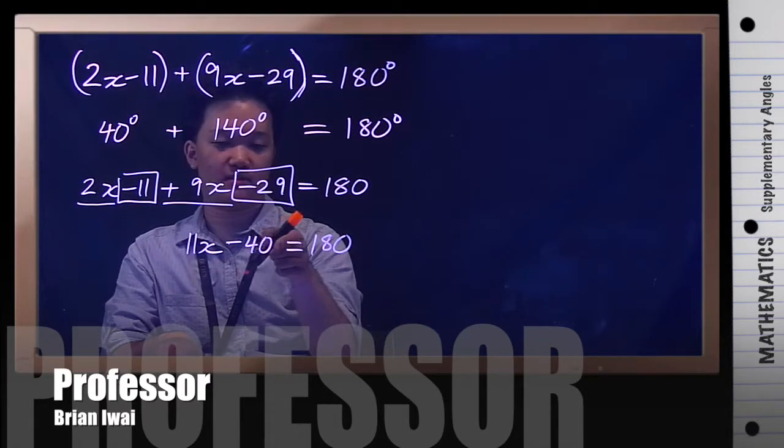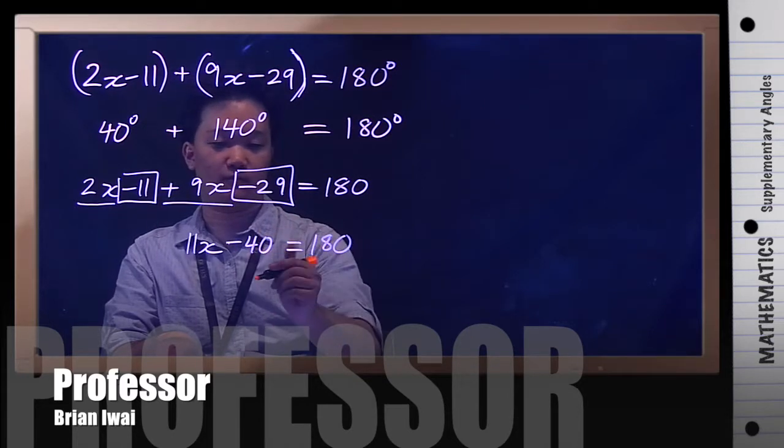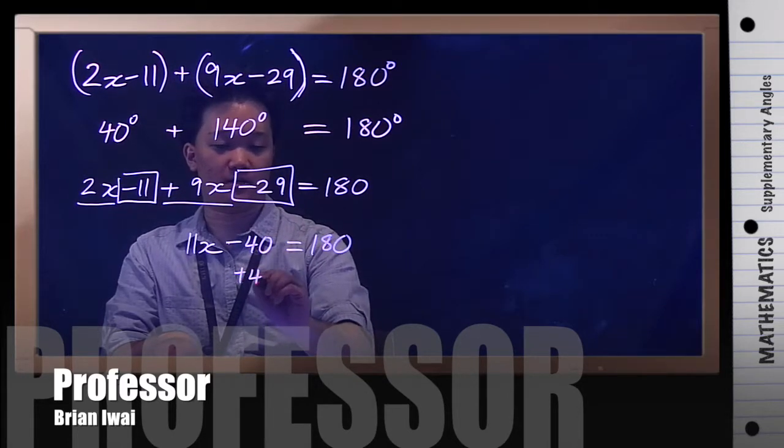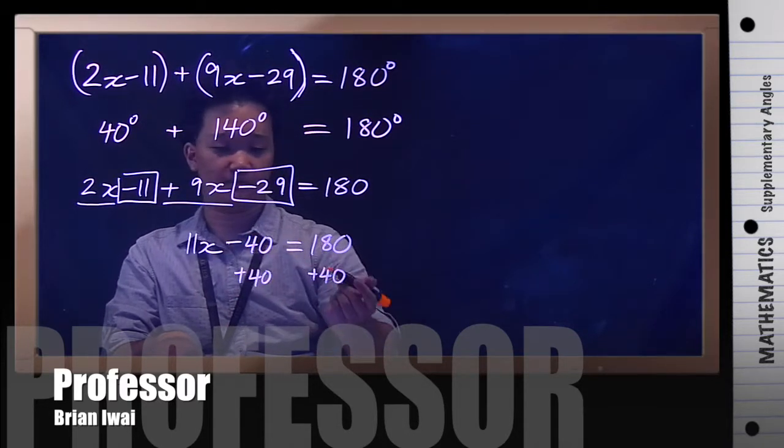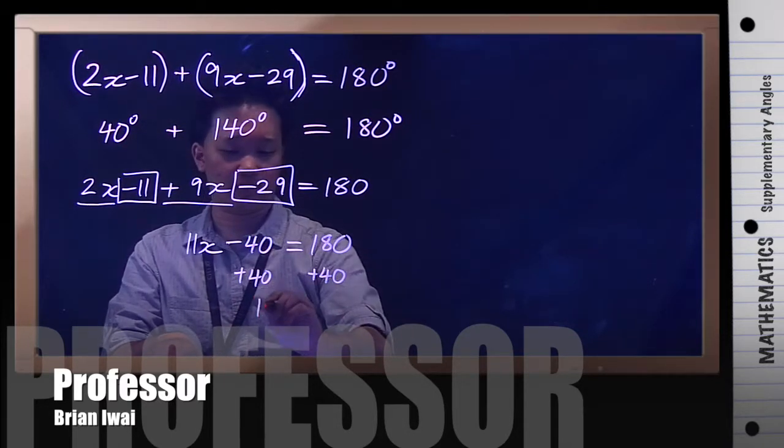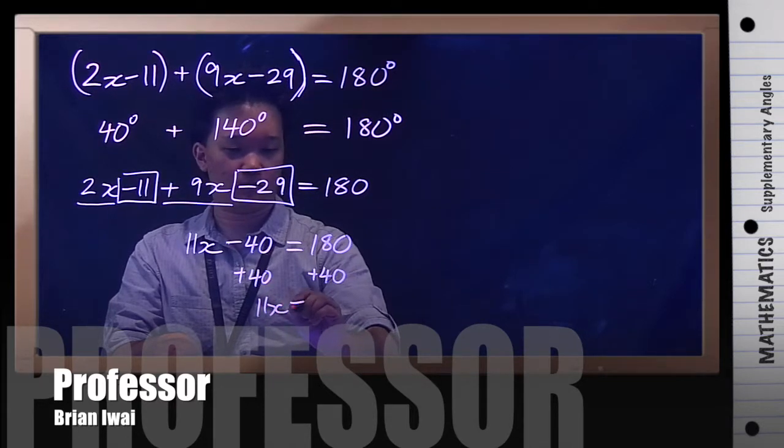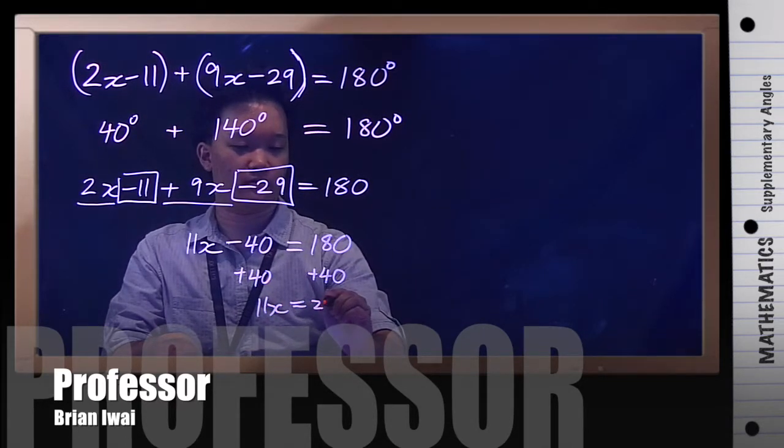Now you want to get x by itself, so first get rid of the negative 40. You do that by adding 40 to both sides, plus 40 plus 40.